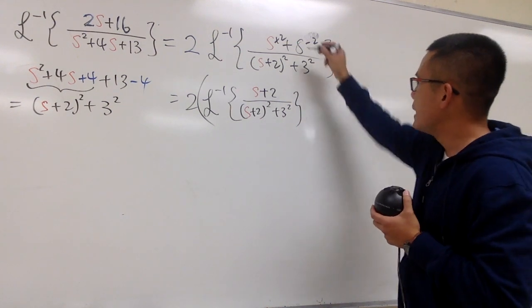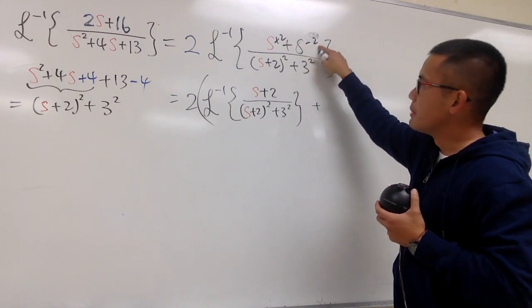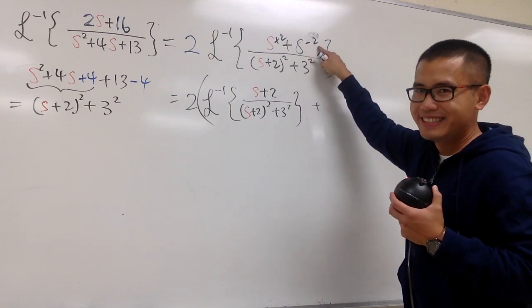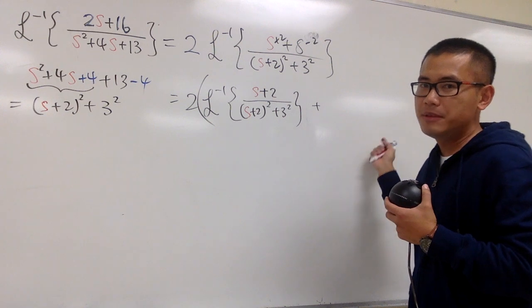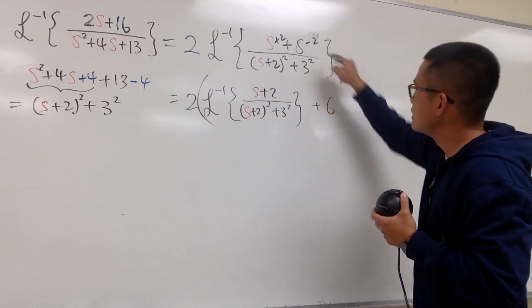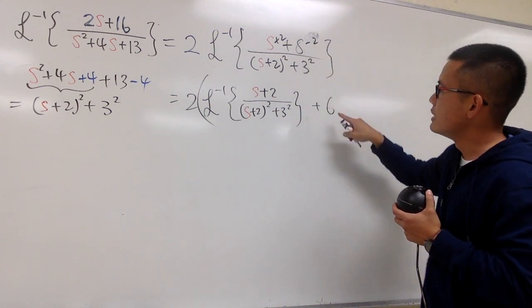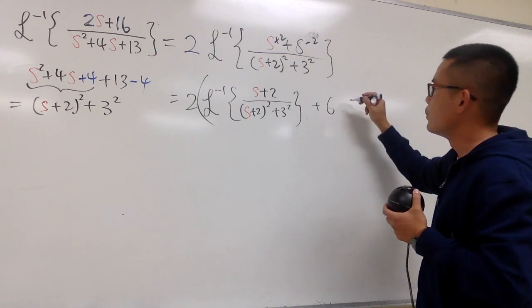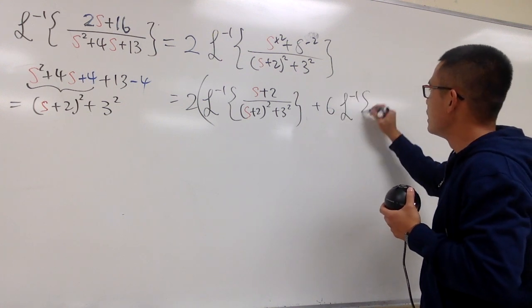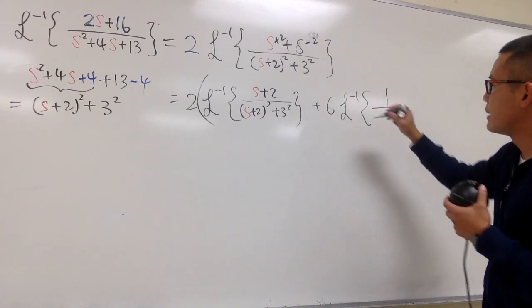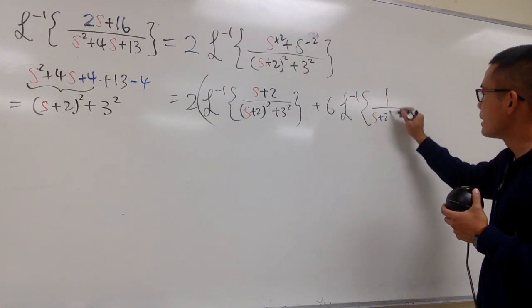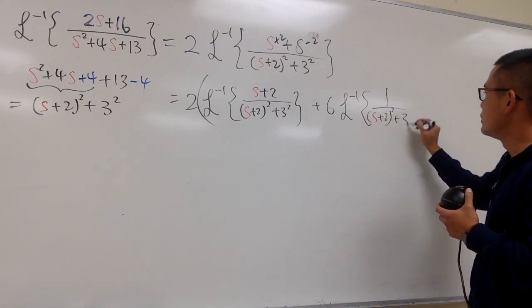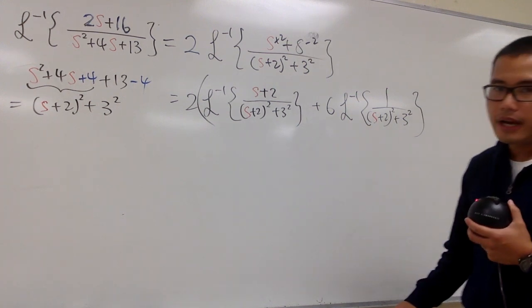And I'll close the first inverse Laplace transform. And then I will be adding this with plus 8 plus, so 8 minus 2 is 6, right? 6. Let me factor that out. So we have plus 6. Once again, 8 minus 2 is 6. And we have the inverse Laplace transform. On the top, we have the 1 over on the bottom, which is the same denominator, s plus 2, square, plus 3, square, like this. All right? Okay.